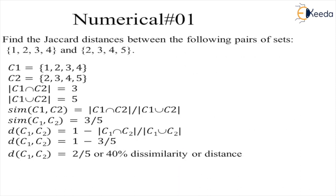Let's understand Jaccard distance by an example. We have set 1: {1, 2, 3, 4} and set 2: {2, 3, 4, 5}. Now set 1 we are representing by C1 and set 2 by C2.